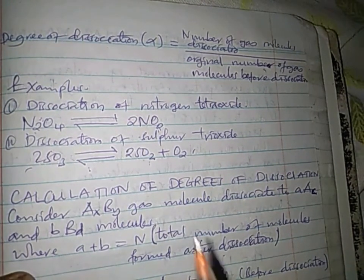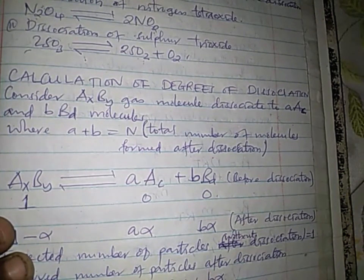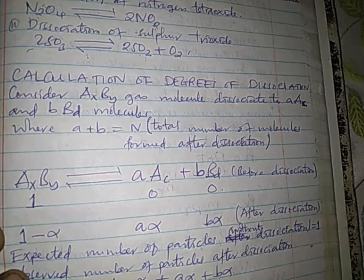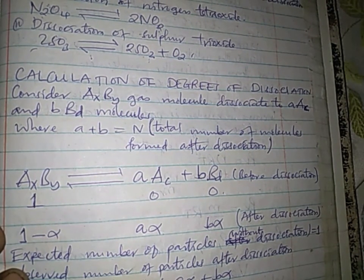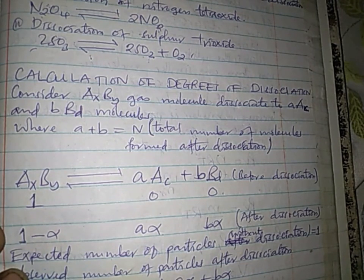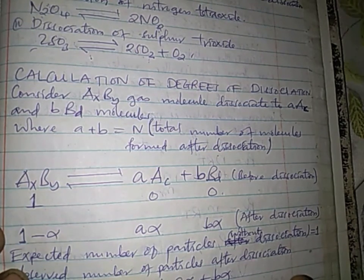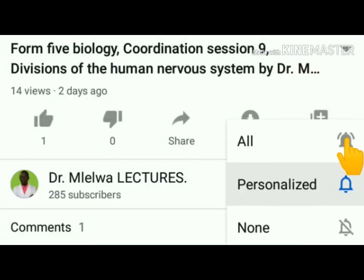In this lecture we have covered the concept of dissociation. Next we will look at calculation of the degree of dissociation and the concept of the van't Hoff factor — these are very important concepts because some exam questions mix the concepts of equilibrium and gases, requiring use of the degree of dissociation and the van't Hoff factor. Don't forget to subscribe to the channel and share this video with fellow students. Thank you everybody.